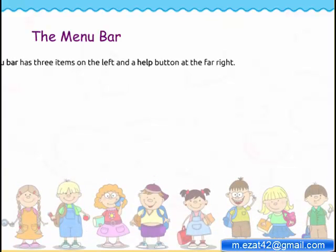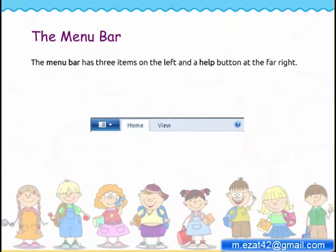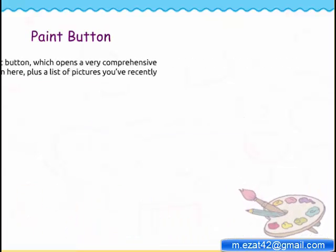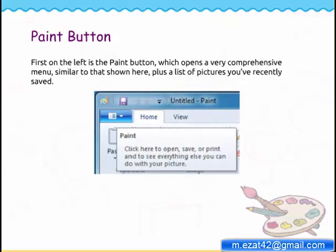The menu bar has three items on the left and a help button at the far right. First on the left is the paint button, which opens a very comprehensive menu, similar to that shown here, plus a list of pictures you've recently saved.